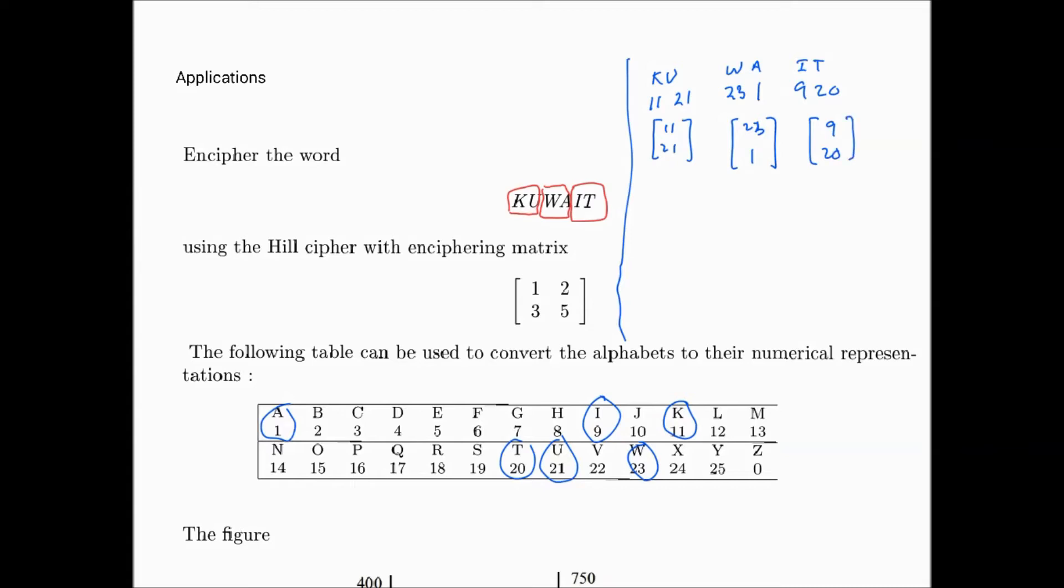As you may recall, the way the Hill cipher works is we take the enciphering matrix [1 2; 3 5] and multiply it by each one of these paired letters converted to numbers. That will mean 11 plus 42, which is 53, and the other one will be 33 plus 105, which is 138. Now the mod we're using here is division by 26.